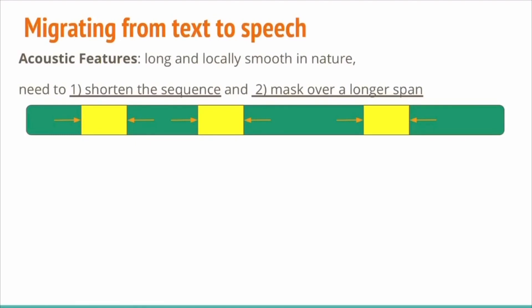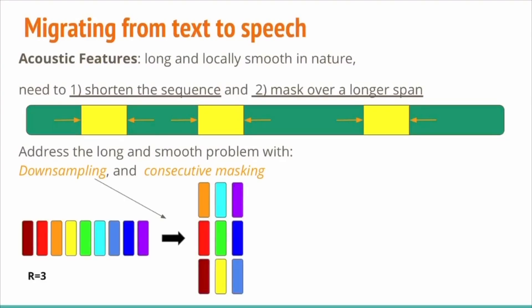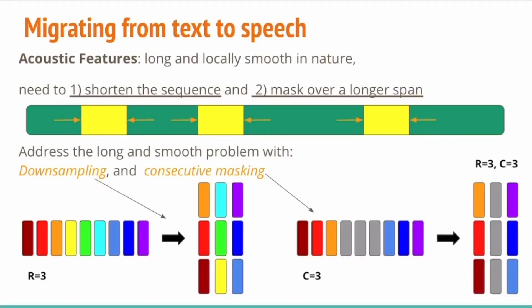I would like to address some of the main differences between BERT, a NLP model that operates on discrete text, and our model Mockingjay, that operates on acoustic features. Acoustic features can be very long in sequence length and locally smooth. Hence, we need to shorten the input sequence and mask over a longer span. The solution to these two problems are downsampling and consecutive masking. We apply downsampling on input features to adapt our model to long sequences — to reduce the length of frames by a factor of R, we stack R consecutive frames into one step, illustrating the case where R equals 3. For consecutive masking, we mask consecutive frames C to zero. By masking a longer span, the model is required to infer on global structure rather than local information, illustrating the case where C equals 3.